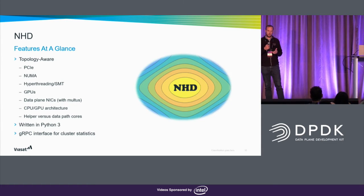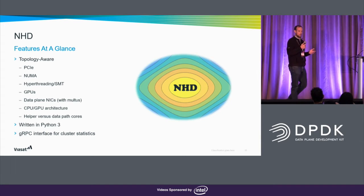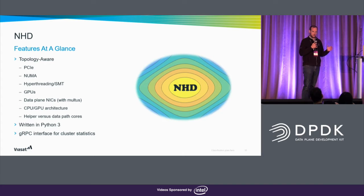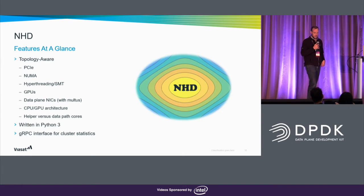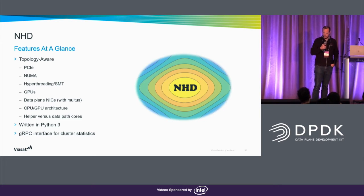You might want to put the helper cores on hyper-threaded cores that are shared amongst each other, or you want the data path cores on their own hyper-threaded core with nothing else on the sibling. So we made a scheduler that's able to do this in Kubernetes.